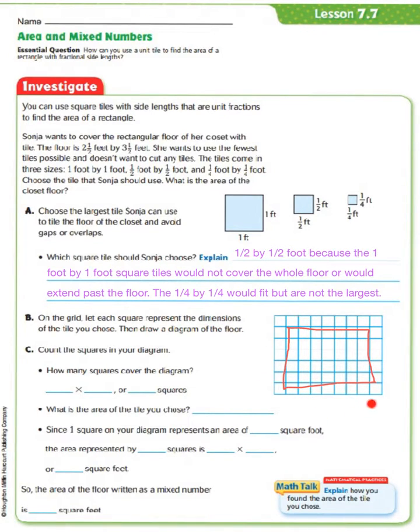Okay, here's the diagram that we chose of the floor. Now it says to count the squares in your diagram. Well, we have two choices for counting the squares. We can count each square individually within our diagram, or we can count the number of squares down, which is 1, 2, 3, 4, 5, and put that in our box over here.